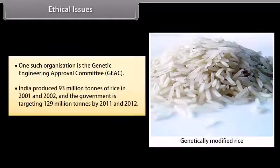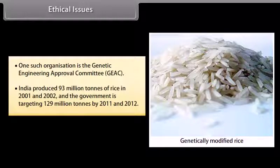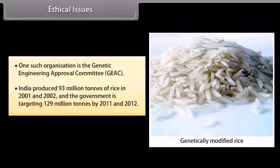India produced 93 million tons of rice in 2001 and 2002, and the government was targeting 129 million tons by 2011 and 2012.